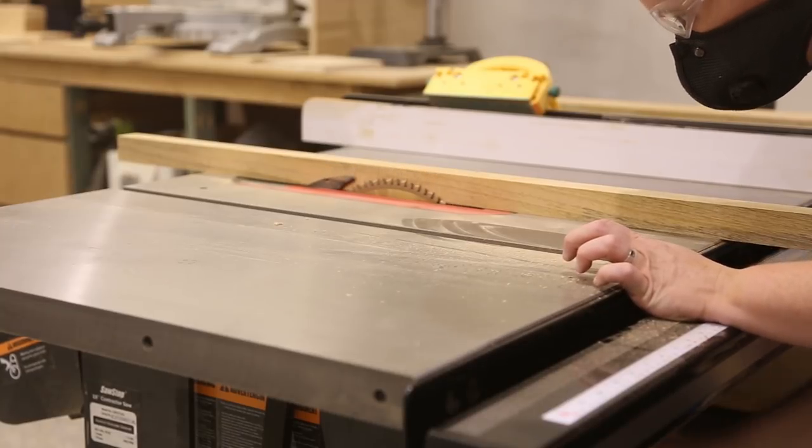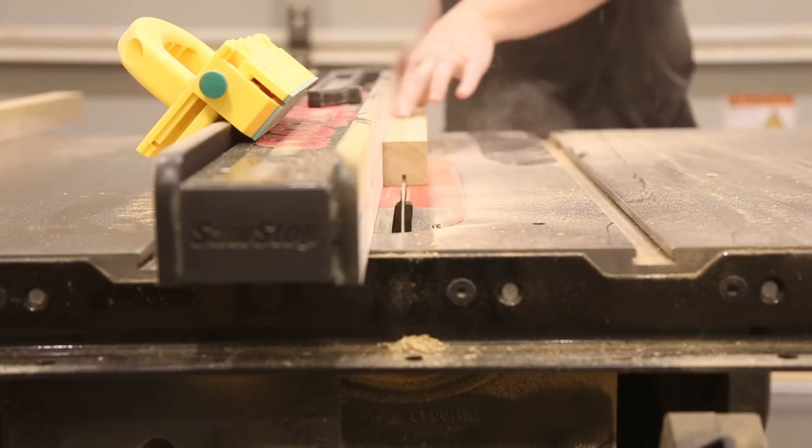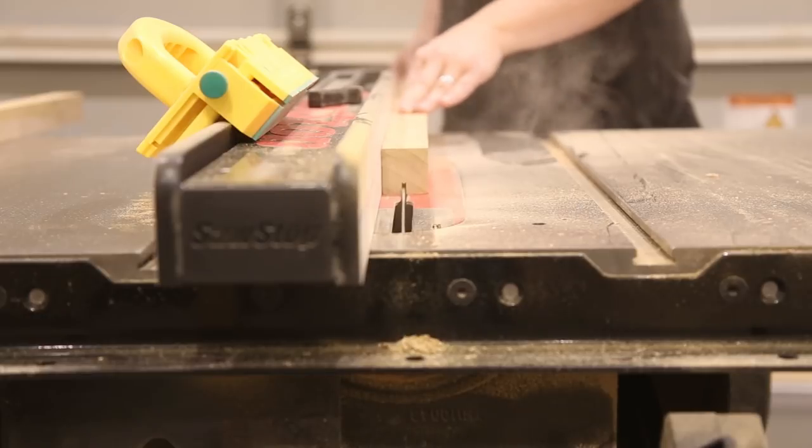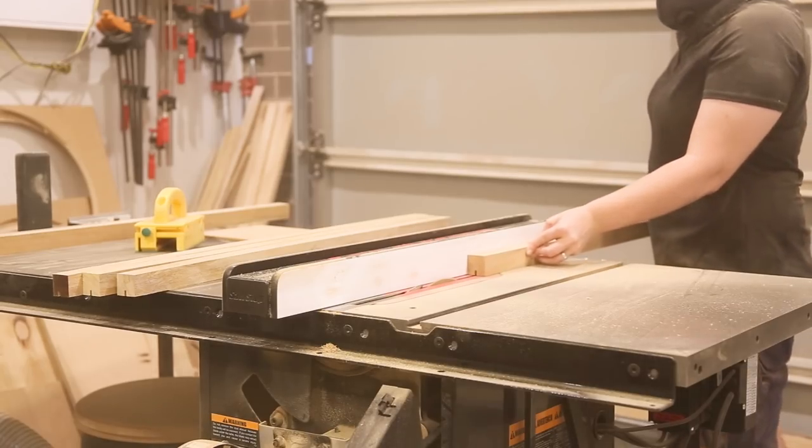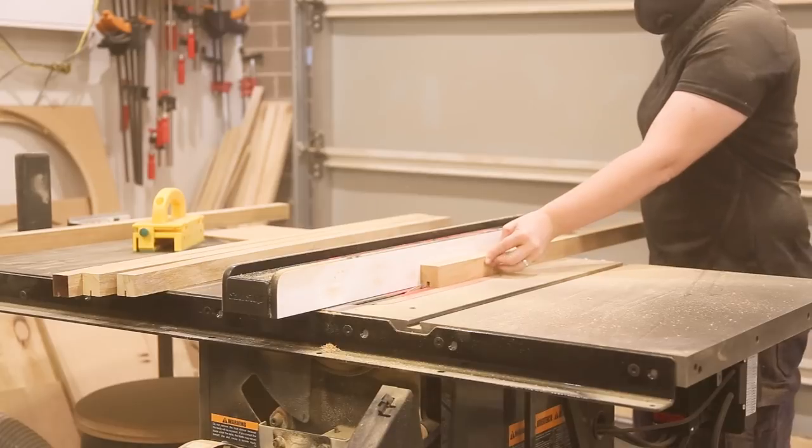I lowered the blade down to about 10 mil and cut a dado through the middle of the oak. After one pass I moved the fence over a little and made a second pass and checking along the way that the piece of MDF fit.